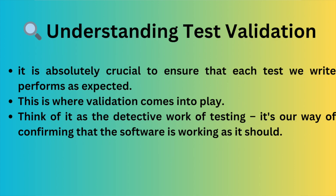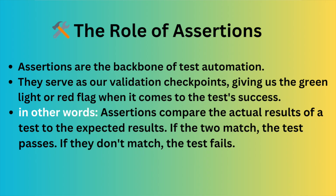Understanding test validation is absolutely crucial to ensure that each test we write performs as expected. This is where validation comes into play — think of it as the detective work of testing. Assertions are the backbone of test automation. They serve as our validation checkpoints, giving us the green light or red flag when it comes to test success. In essence, they are the judges in our testing courtroom, deciding whether our test has performed its duties properly. Assertions compare the actual results of a test to the expected results — if the two match, the test passes; if they don't match, the test fails.